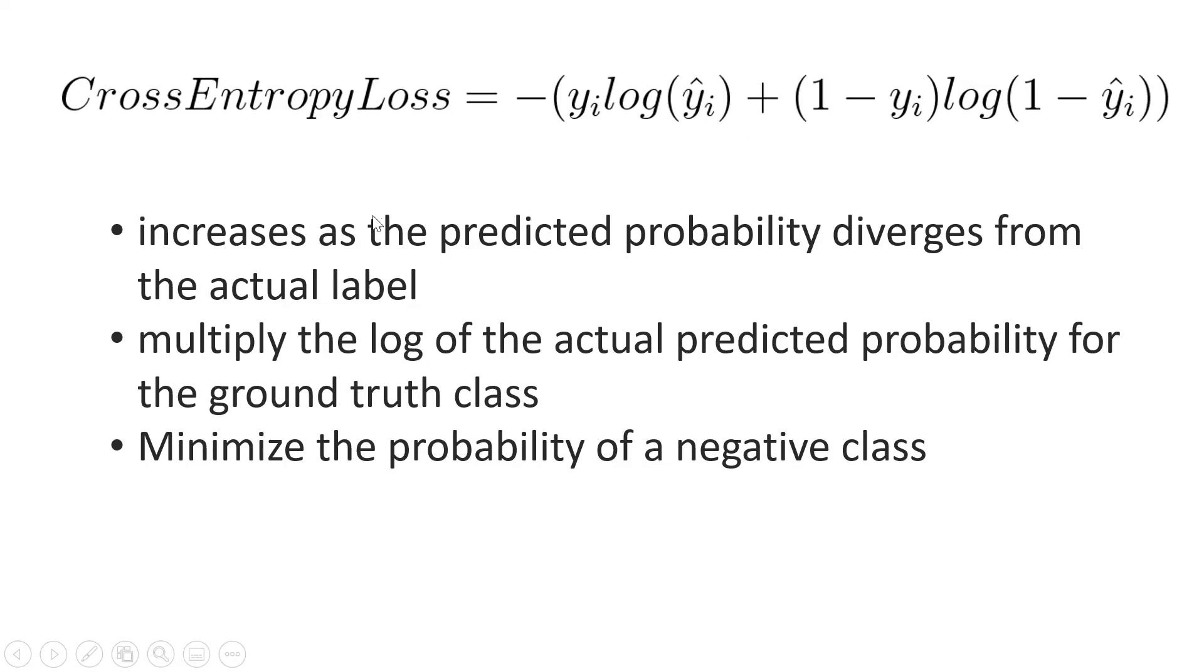The value of the loss increases when the predicted probability diverges from the actual label. That means the farther the point from the actual label, the loss is also getting higher. What we do here is we multiply the log of the actual predicted probability for the ground truth class.